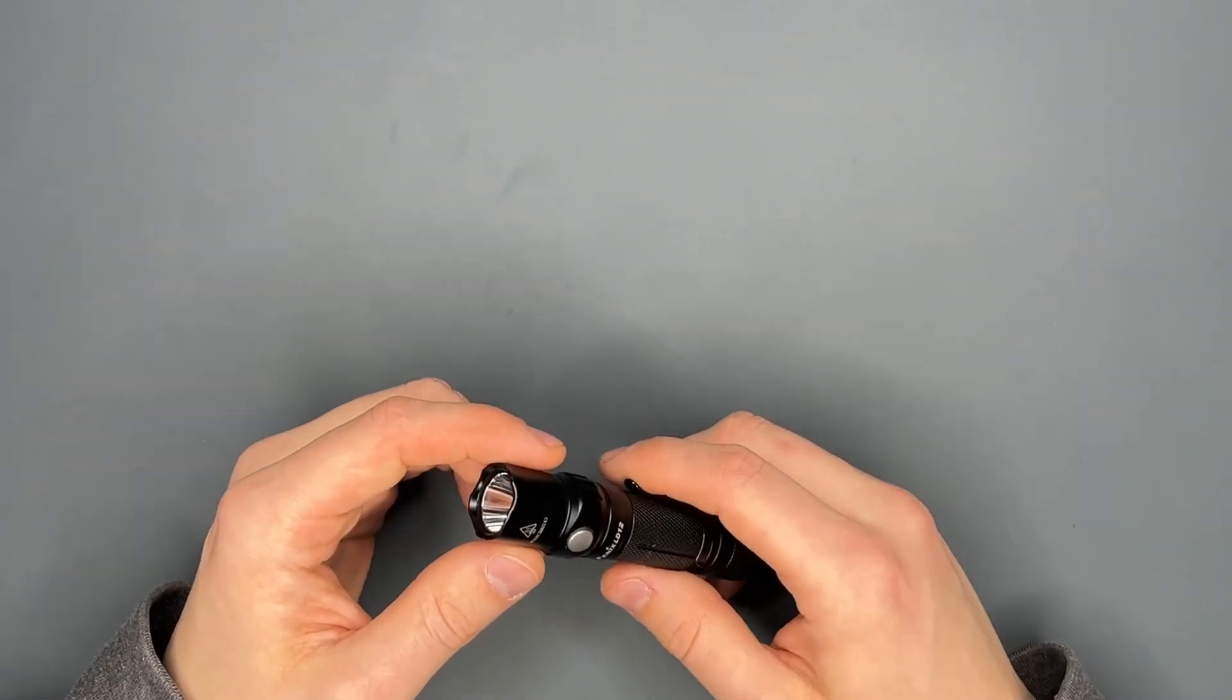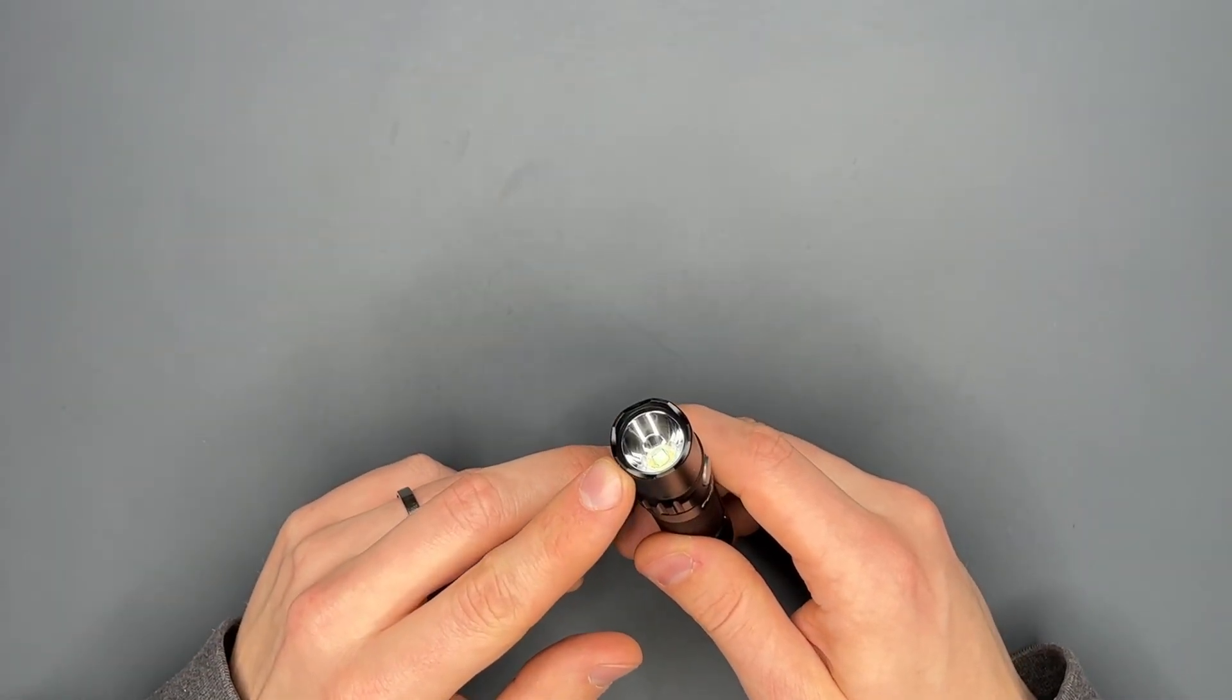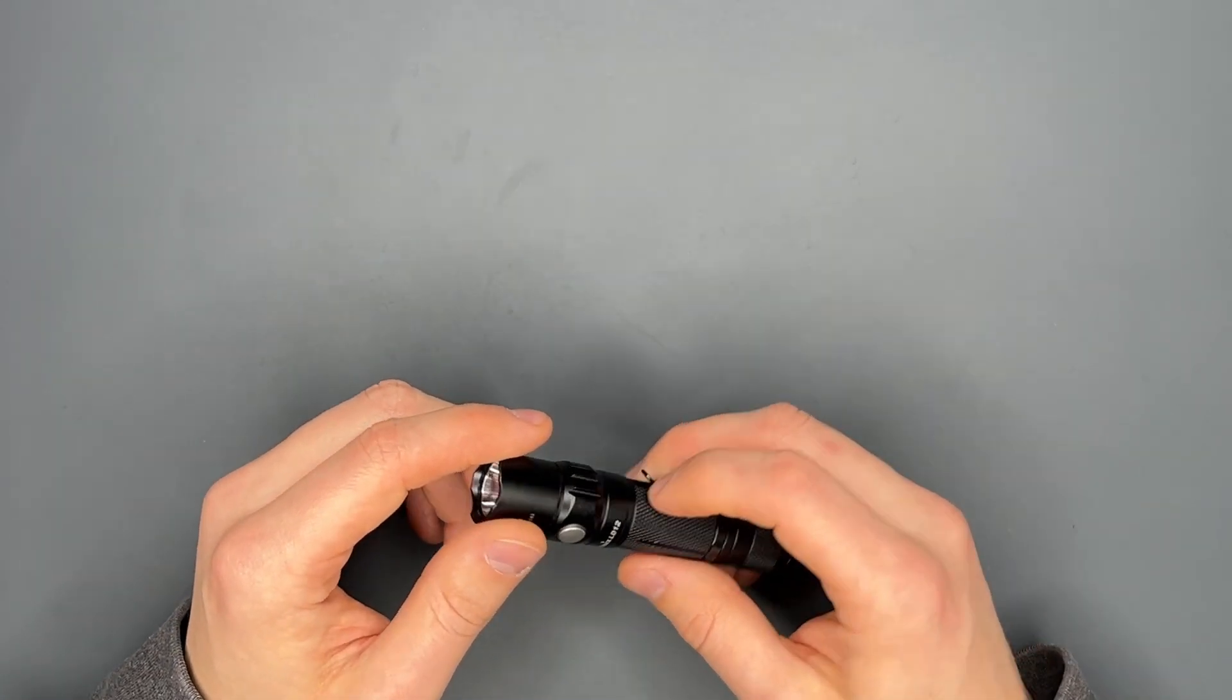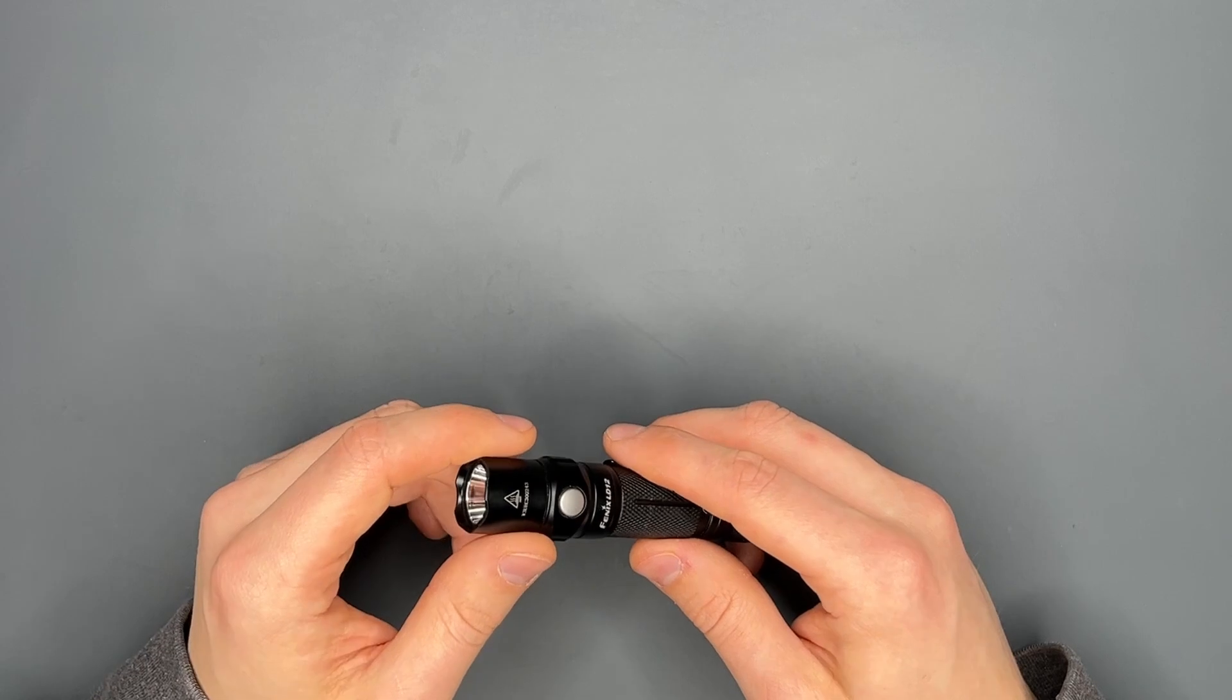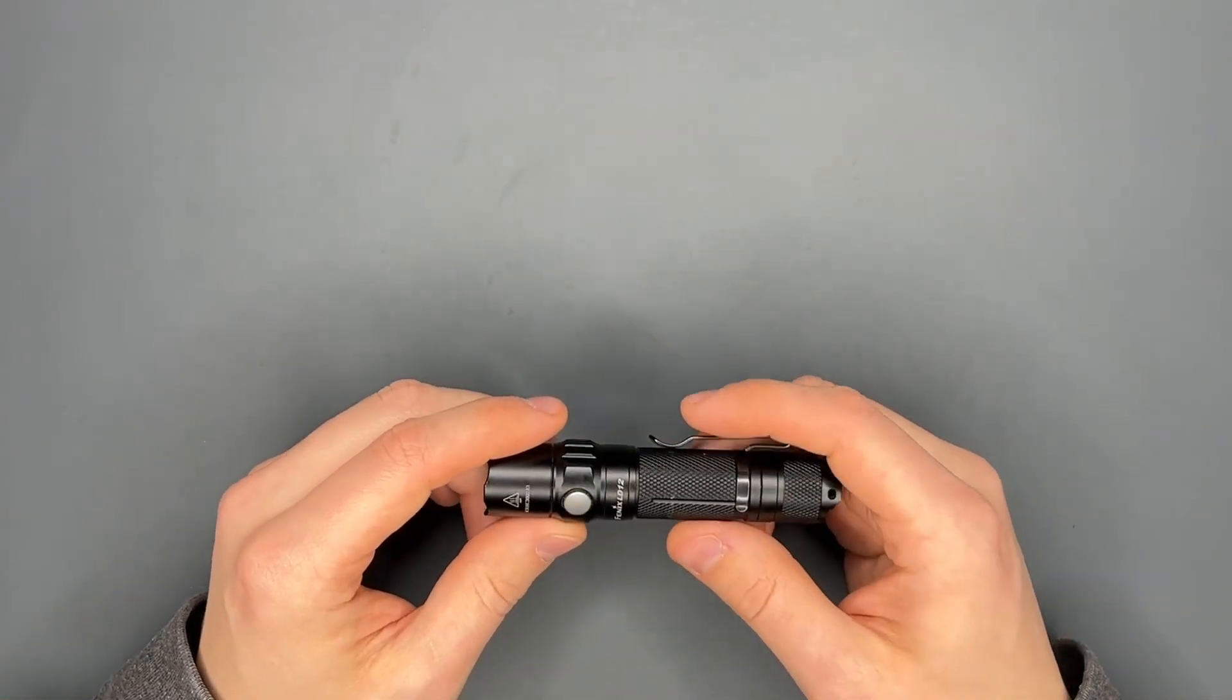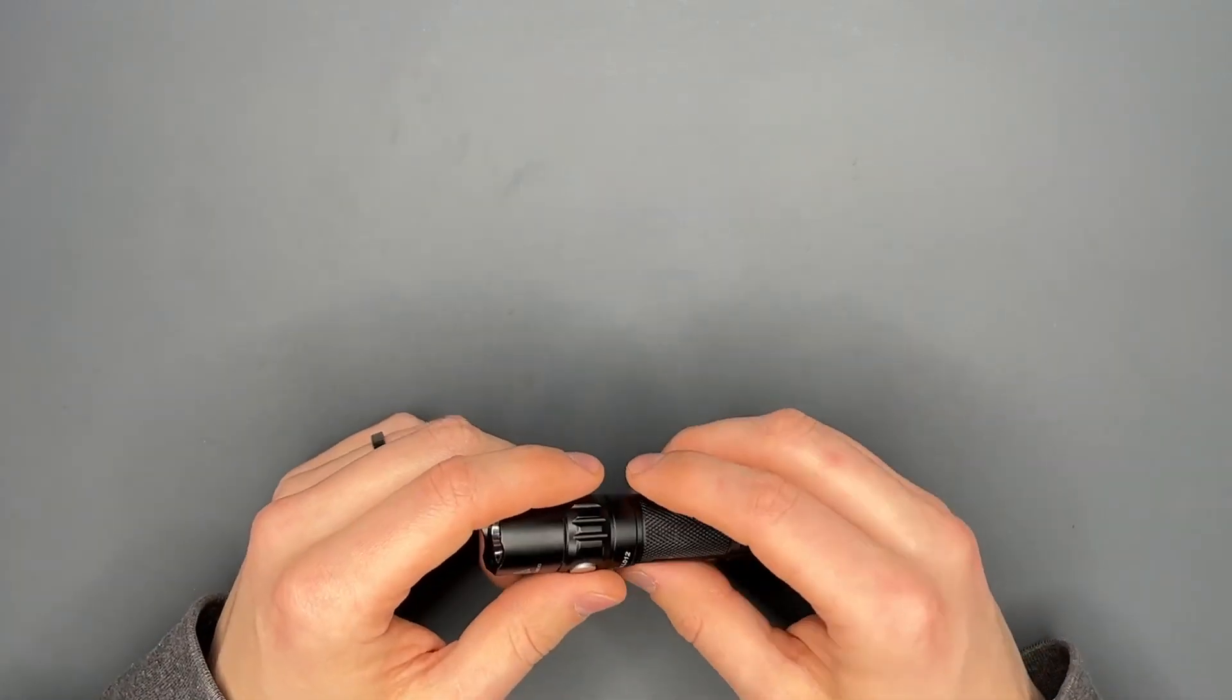Another reason I bought this light is Fenix says this has the Cree XPG2R5 LED inside here. This LED is rated to have a lifespan of 50,000 hours. And again, that was something I was looking for when buying an EDC light, something that kept going. And so far I have no problem with that.